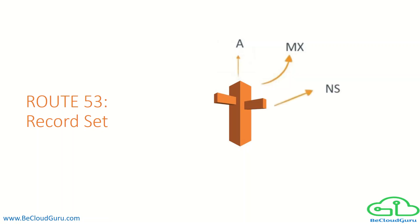The NS record identifies the name servers for the hosted zone. The name servers know how you want to route traffic for your domain and subdomains, based on the records you created in the hosted zone for the domain.